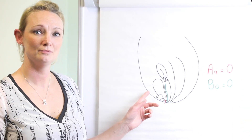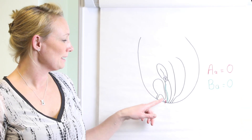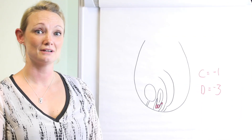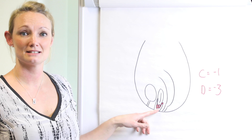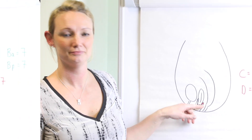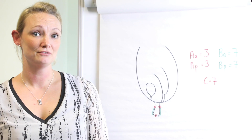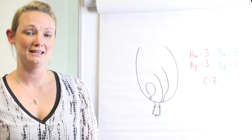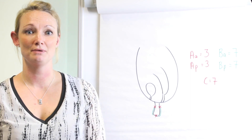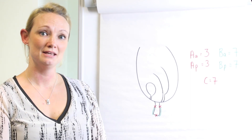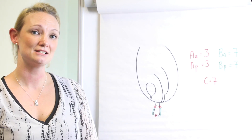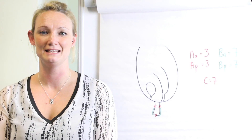Here is a cystocele where point AA and BA are both at zero. Here is uterine descent where the cervix is at minus one and D is at minus three. Here is a complete vault eversion which shows that AA and AP are both at plus three, as distal as they could be. BA and BP are at plus seven, which is the same as point C. In this case there's no uterus so there's no need to record D.